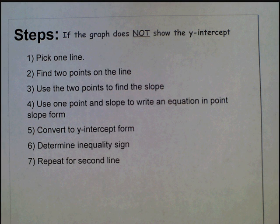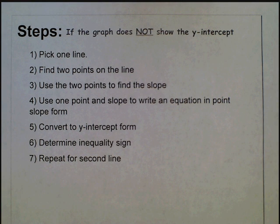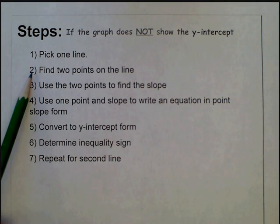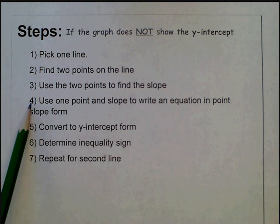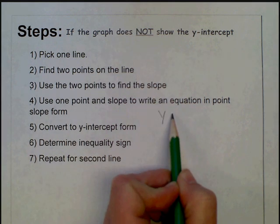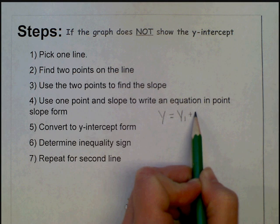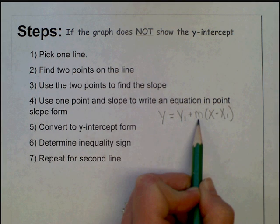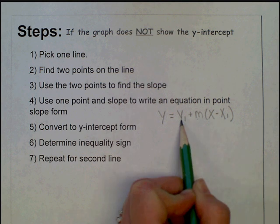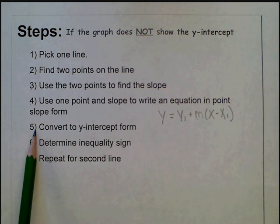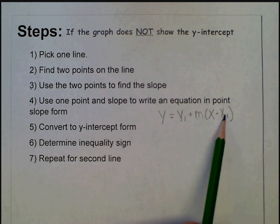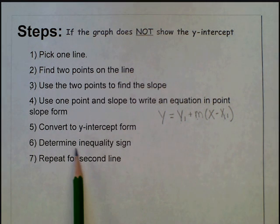If your line does not give you the y-intercept, follow these steps: pick one line, find two points on that line, use those two points to find the slope with the slope formula or slope triangle. Then use one point and the slope to write an equation in point-slope form. Point-slope form is y equals y1 plus m times x minus x1, where m is your slope and x1, y1 are the values of the point you used. After that, convert to slope-intercept form by distributing the slope and collecting like terms, then determine the inequality sign and repeat for the second line if needed.